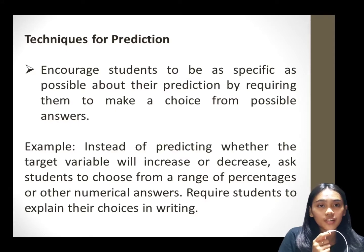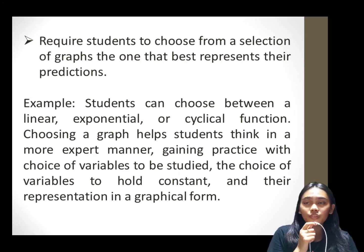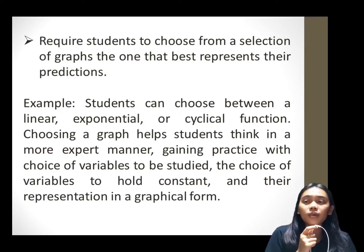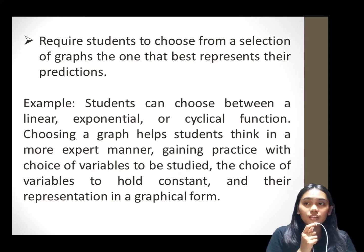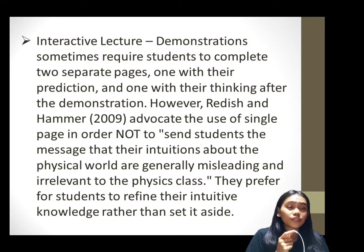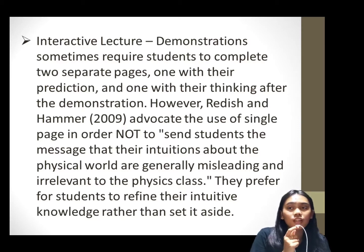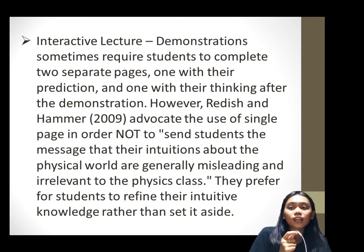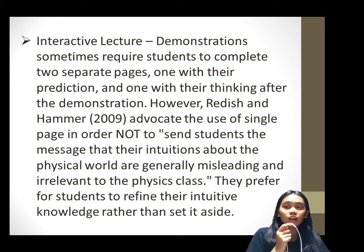Students are required to explain their choices in writing. Prediction also requires students to choose from a selection of graphs the one that best represents their predictions. For example, students can choose between a linear, exponential, or cyclical function. Choosing a graph helps students think in a more expert manner, gaining practice with choice of variables to be studied, the choice of variables to hold constant, and their representation in graphical form. Interactive lecture demonstration sometimes requires students to complete two separate pages — one with their prediction and one with their thinking after the demonstration. However, Reddish and Hammer 2009 advocate the use of a single page so as not to send students the message that their intuitions are generally misleading. They prefer for students to refine their intuitive knowledge rather than set it aside.